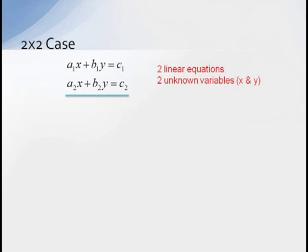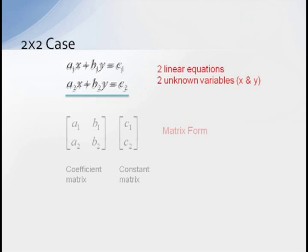Now suppose we have a system of two linear equations involving two unknowns X and Y. A general example of this would be the system A1X plus B1Y equals C1 and A2X plus B2Y equals C2. The matrix representation of this would include the coefficient matrix and a column matrix for the constants.